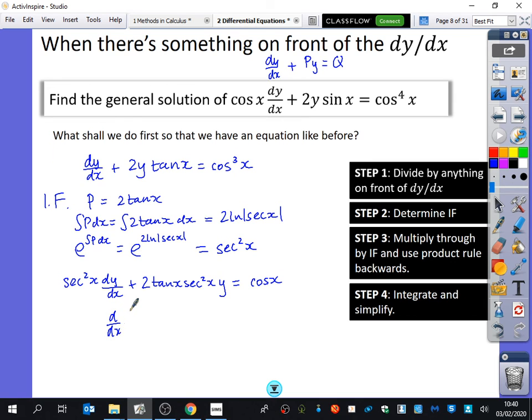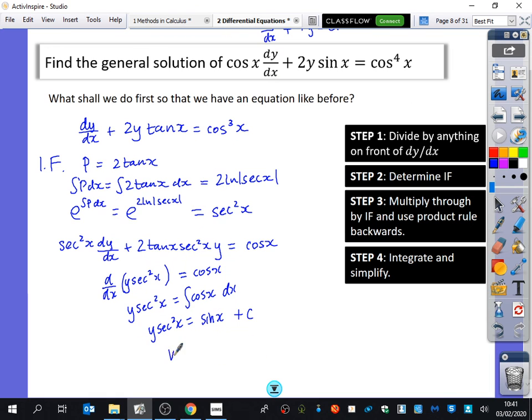So you get d/dx of sec squared x with the y. I'm going to put the y inside the front there equals cos x. So you get y sec squared x equals the integral of cos x. Yeah, I'm just taking it a little bit slow. So y sec squared x equals sin x plus c. So y equals, well, instead of it's over sec squared, sorry, over cos squared. So sin x cos squared x, when you multiply by that, plus c, horrible having to write c in front of cos, plus c cos squared x. That's the solution to this first order differential equation.